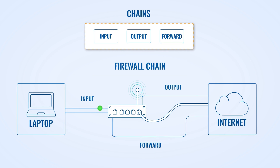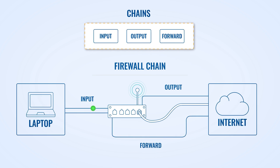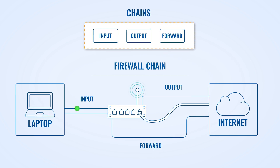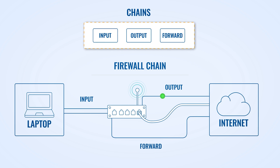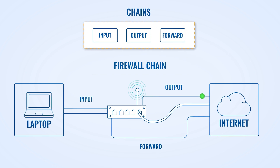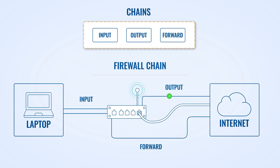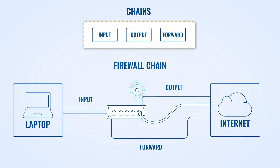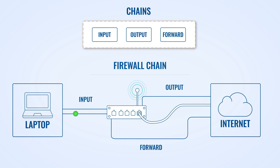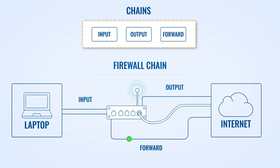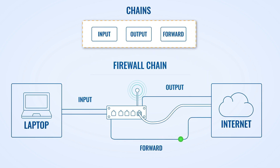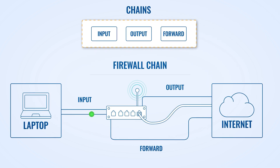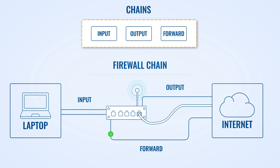The input chain deals with incoming traffic traveling to the router. The output chain handles outgoing traffic from the router. And last but not least, the forward chain administers incoming or outgoing packets that pass through the router and between locally set networks.